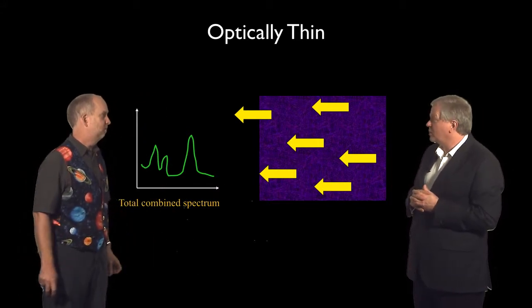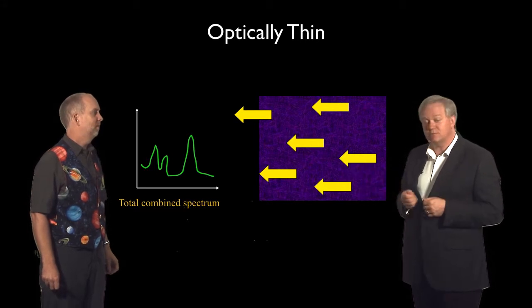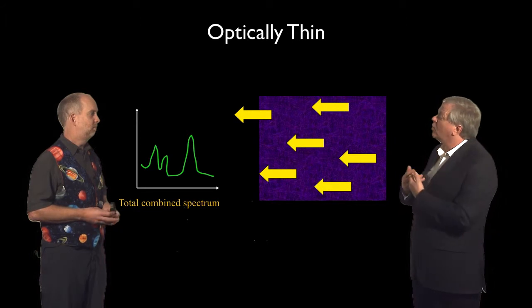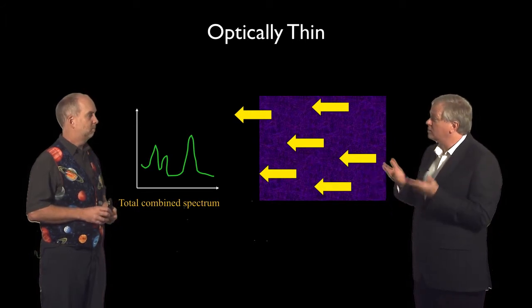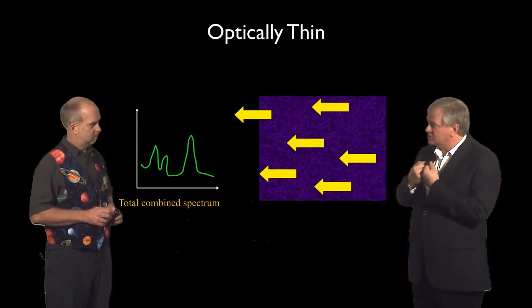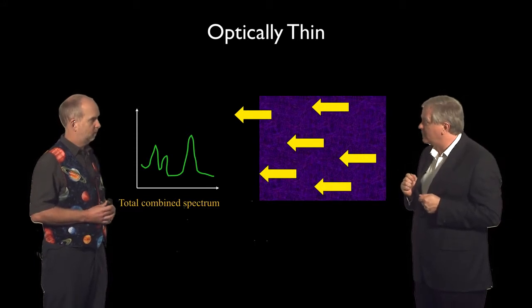In the case of a neon sign, you plug it in and put a lot of energy into it. But you can imagine a star might do it by giving ultraviolet photons, or you could heat the gas up and then the collisions of the atoms into each other would knock the electrons up into new levels.